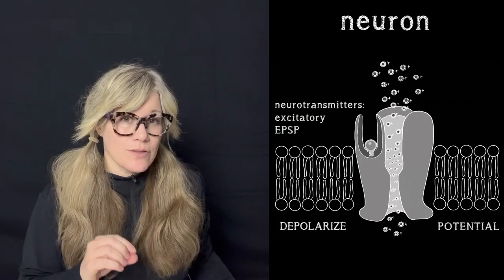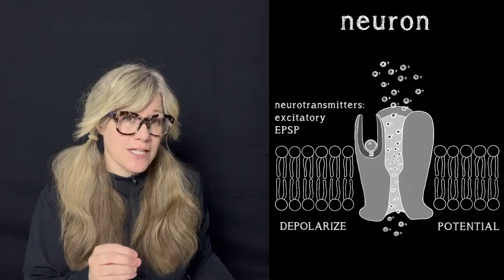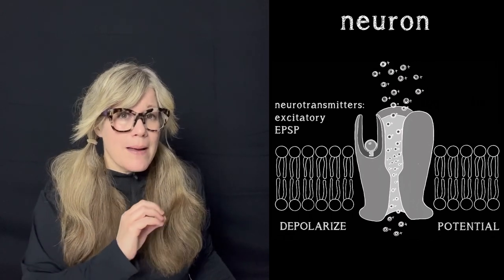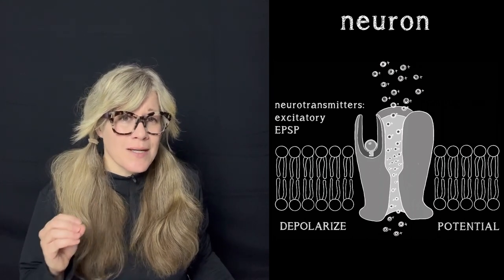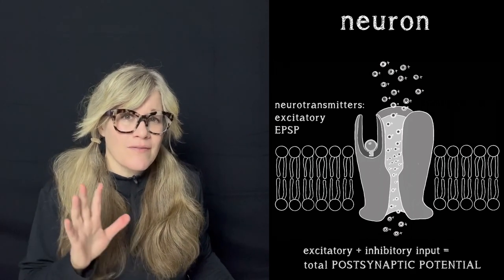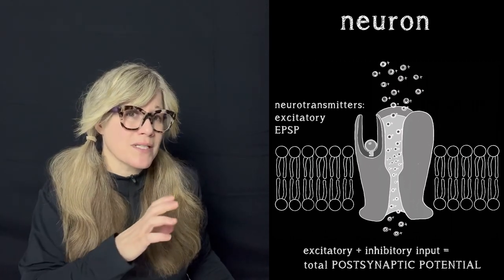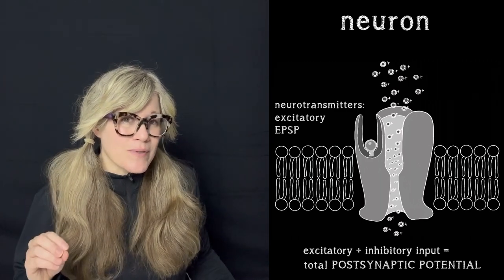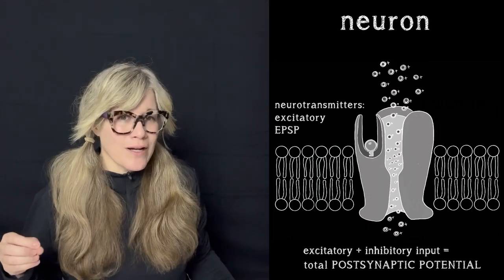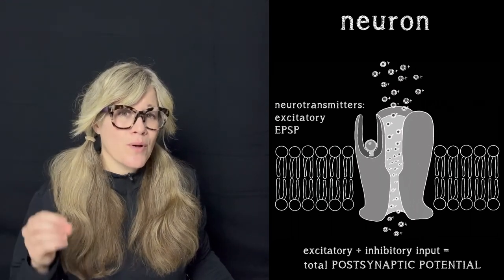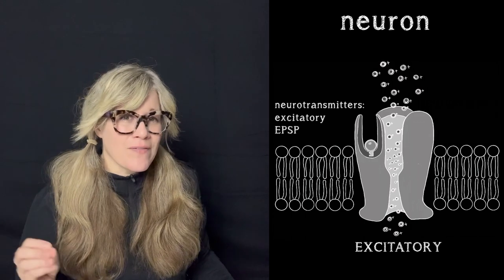An excitatory potential at one synapse may not depolarize a postsynaptic dendrite membrane enough to create an action potential that moves the signal along. But all of a neuron's dendrites and dendritic spines together receive a ton of inputs at the same time, and the summation of simultaneous excitatory and inhibitory inputs results in a total postsynaptic potential. Since excitatory potentials are more likely to create enough potential to move the signal along, we'll assume that our neuron example received a total postsynaptic potential that is excitatory and at a large enough magnitude that we can follow it along the neuron.